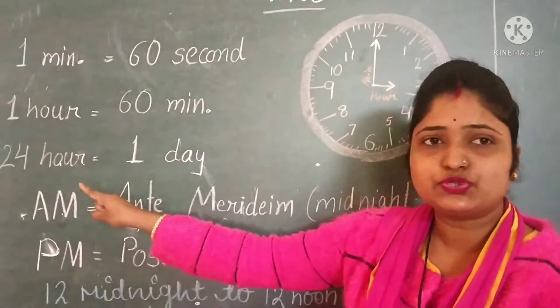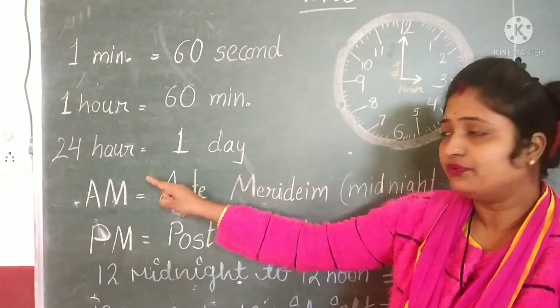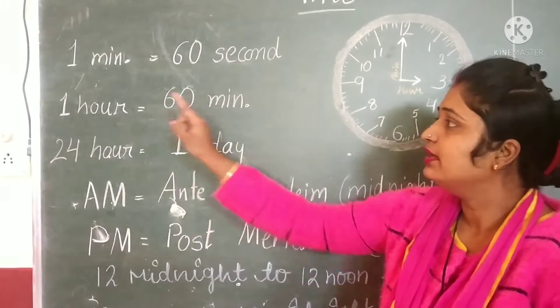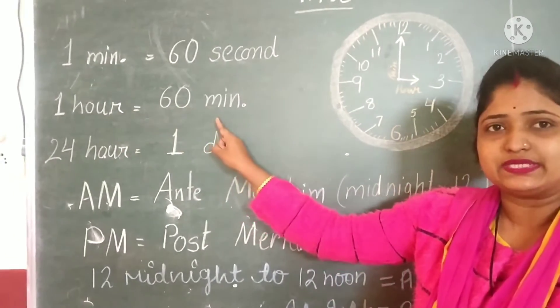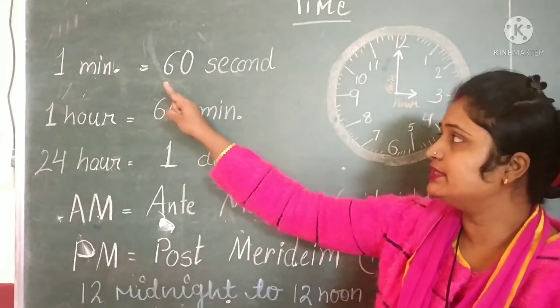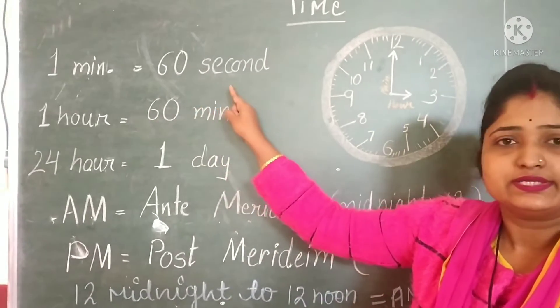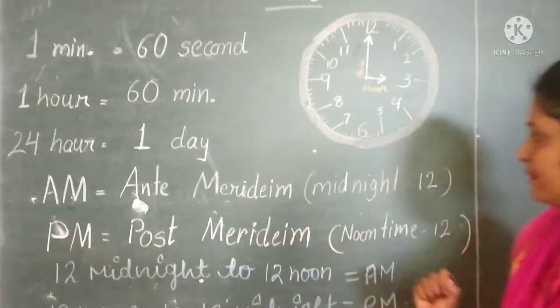1 day equals to 24 hours — we already know that. 1 hour equals to 60 minutes, and 1 minute equals to 60 seconds.